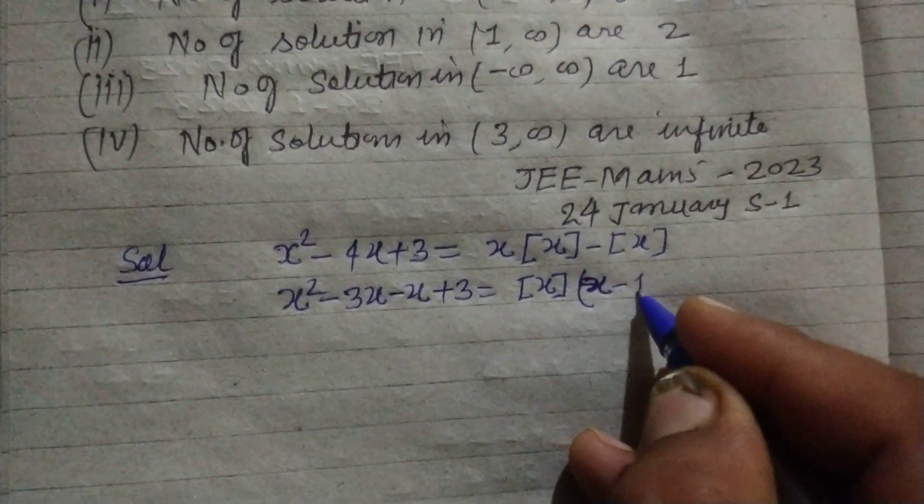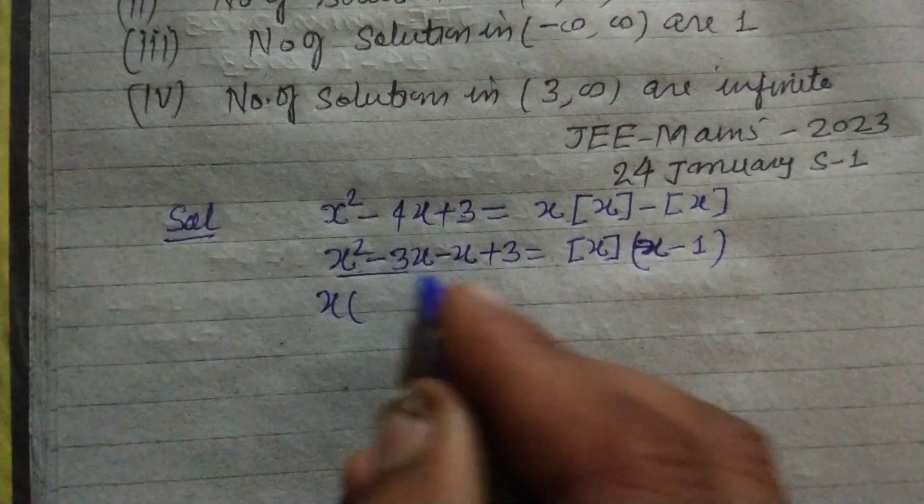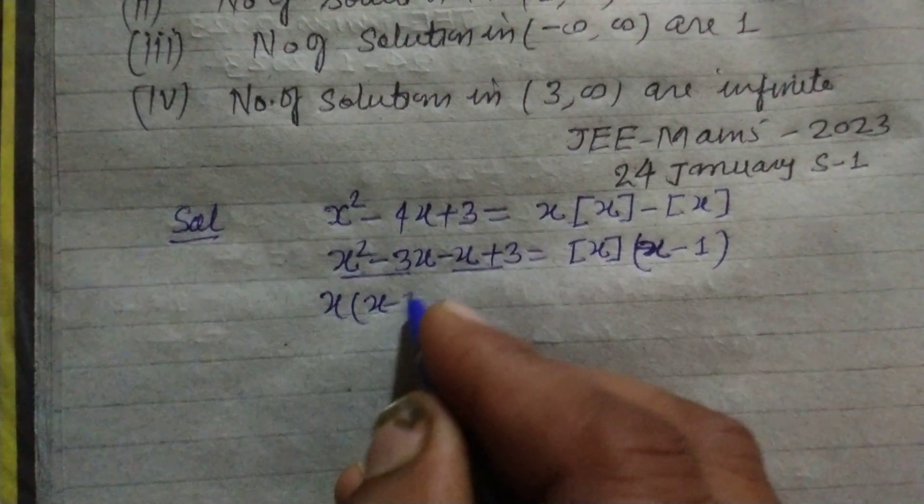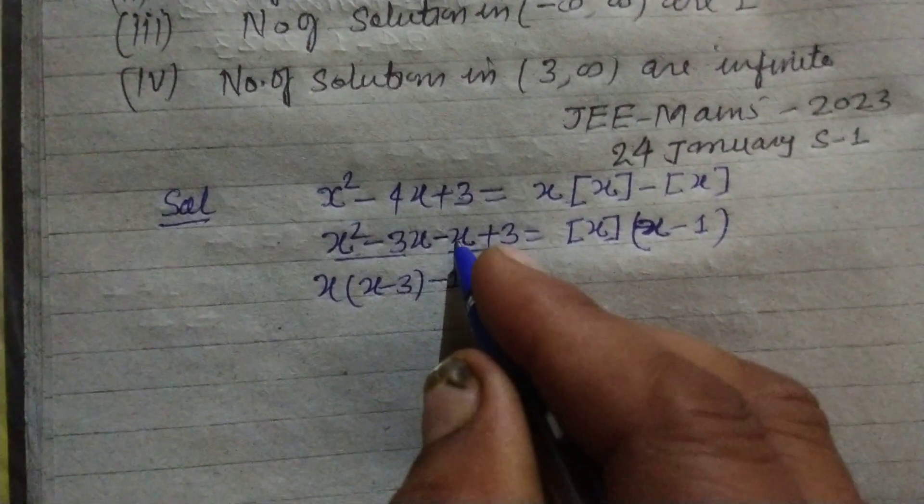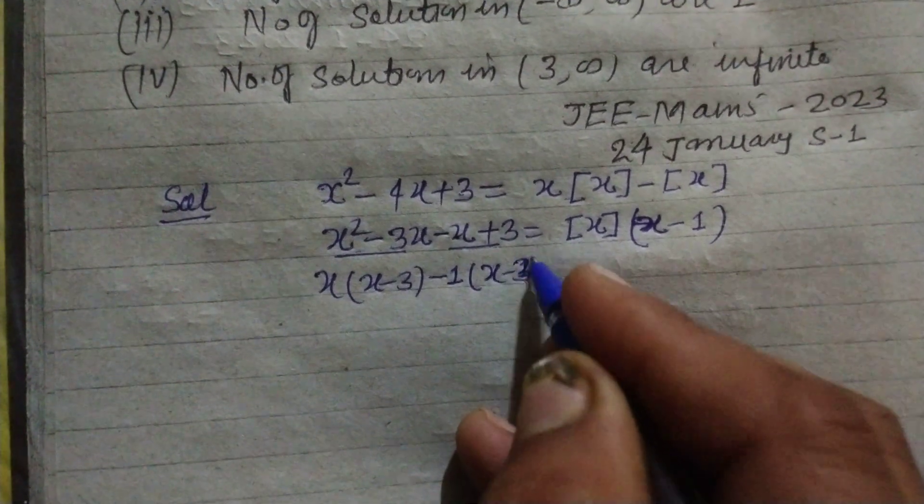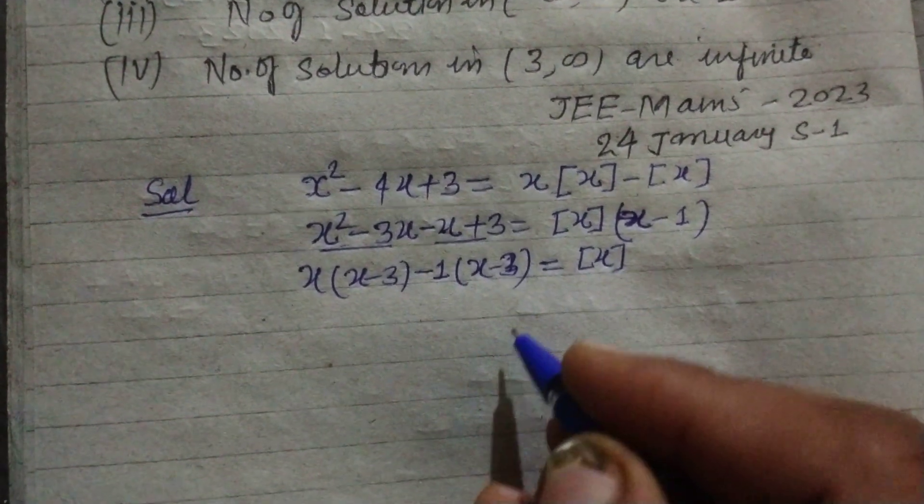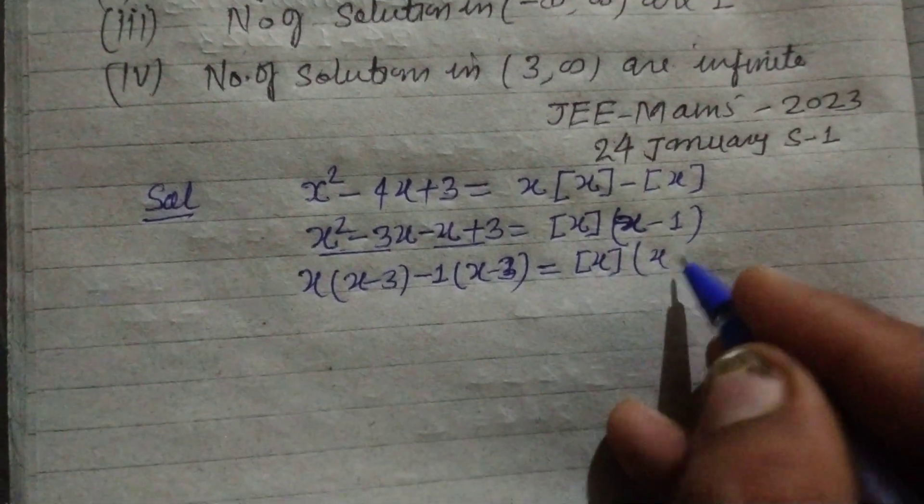So this becomes (x - 1), and when we take x common from these two we get (x - 3). Taking -1 common, we get (x - 1)(x - 3) = [x](x - 1).